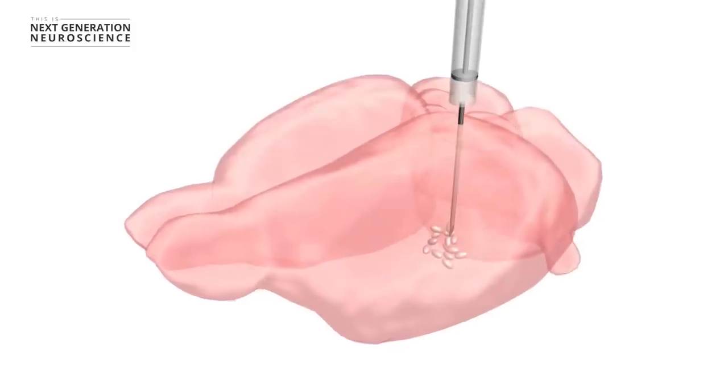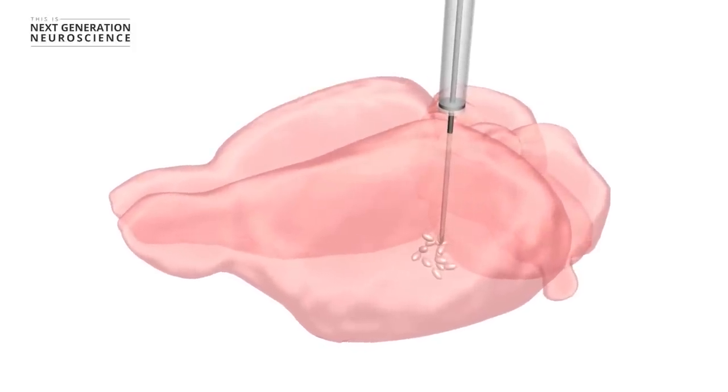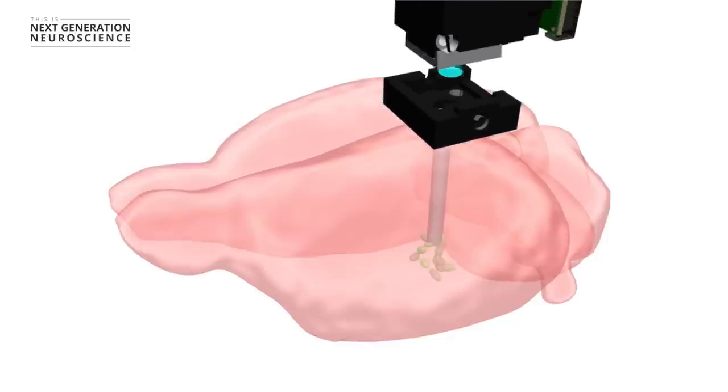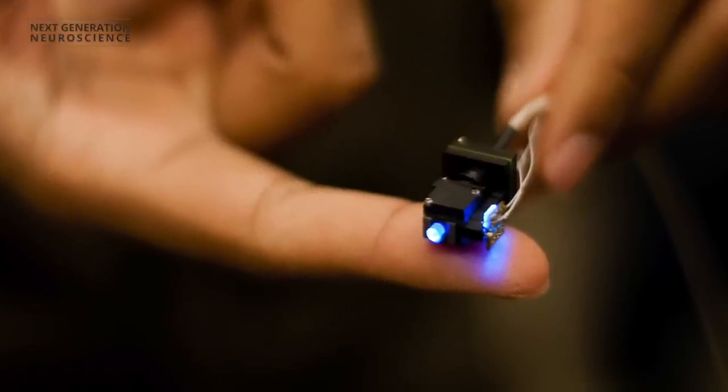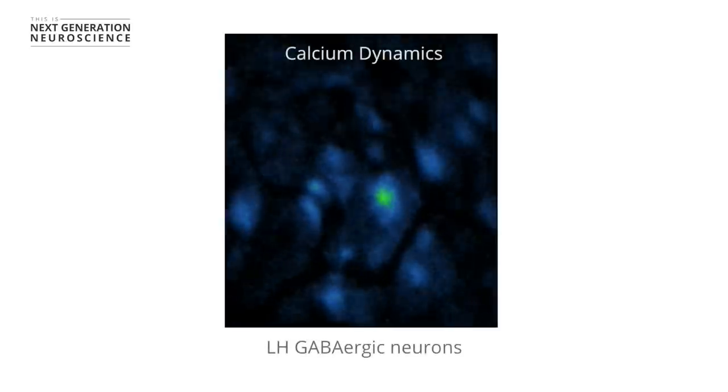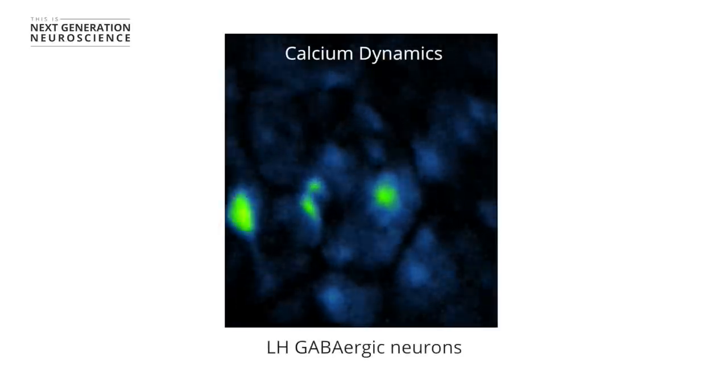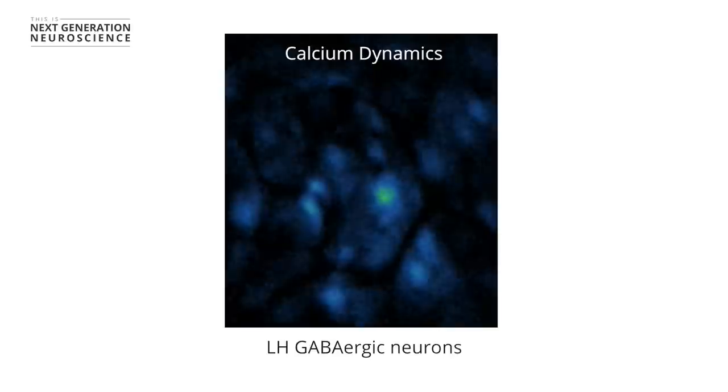What we did was to first introduce these calcium indicators into these GABAergic neurons in the lateral hypothalamus. We then implanted these very small endoscopic lenses. And those lenses interface with the endoscopic microscope, the INVISTA system. And so what this allows us to do is to essentially image through the lens deep into the brain to resolve activity dynamics of these cells, these GABAergic neurons.